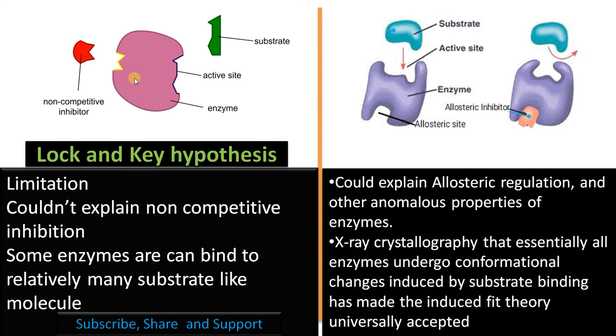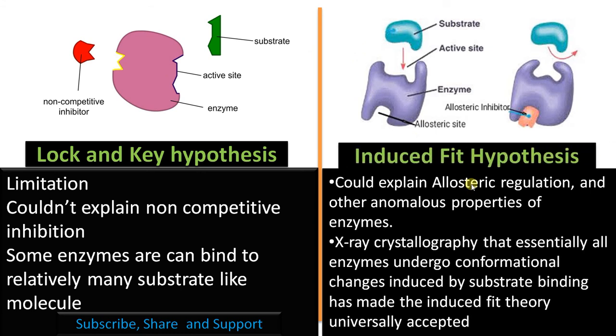Here comes the advantage of Induced Fit model. It could explain allosteric regulation and other properties of enzymes. As you can see in this figure, this is the allosteric site. Allosteric site is a site in the enzyme other than the active site where an allosteric activator or inhibitor binds. So binding of this inhibitor or activator causes a conformational change in the active site that causes promotion of enzyme activity or reduces enzyme activity.